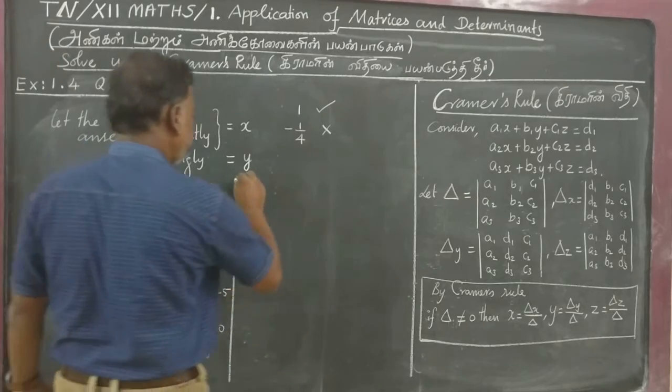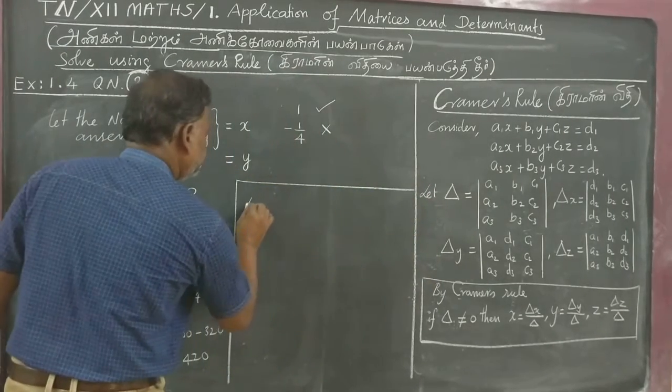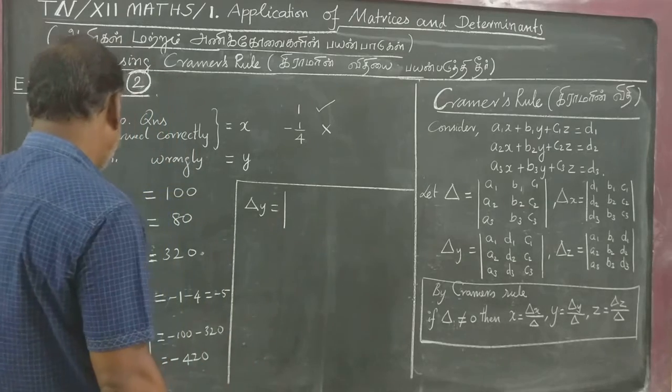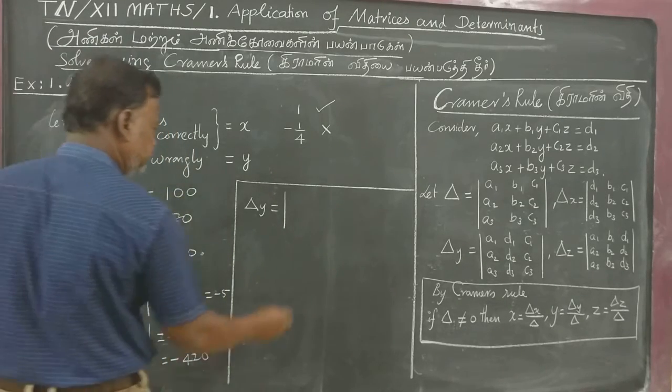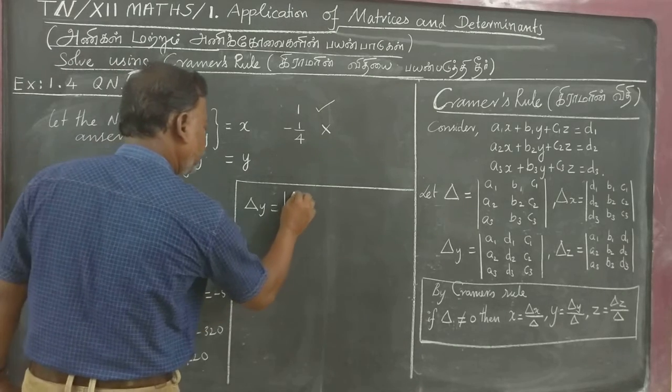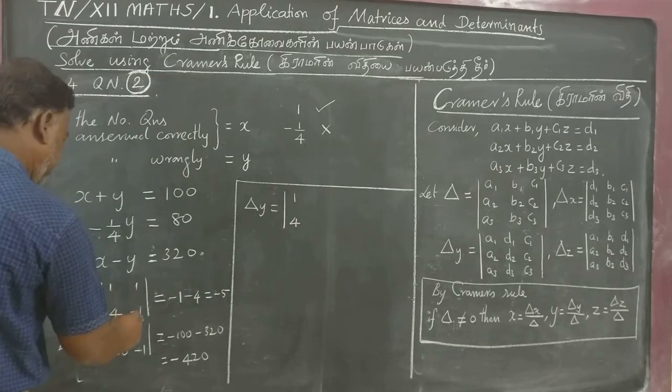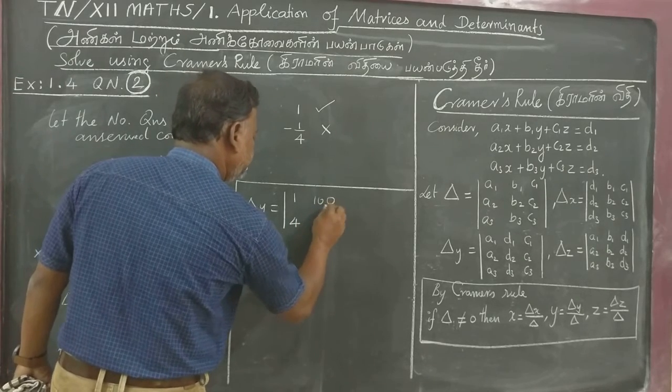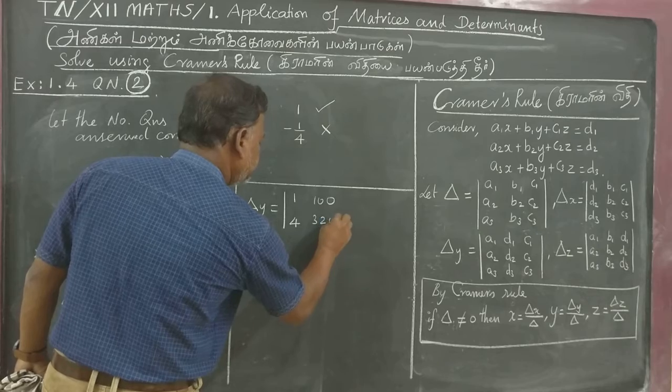And then delta y equals. Delta y, xy as is: 1, 4; y value we have to take this one, 100, 320. 320 minus 400.